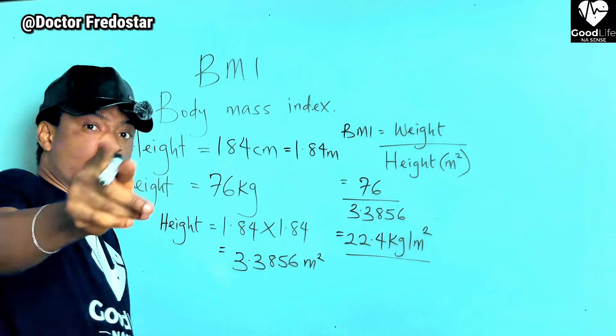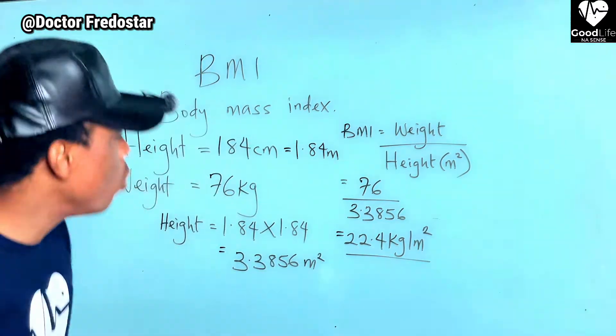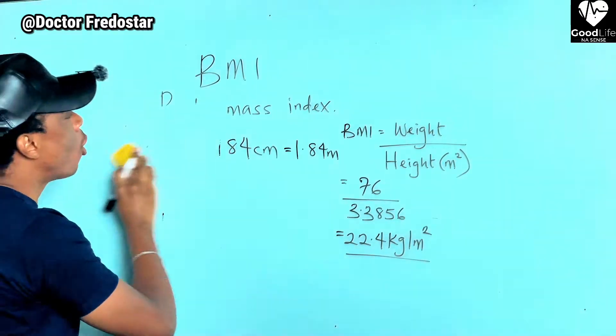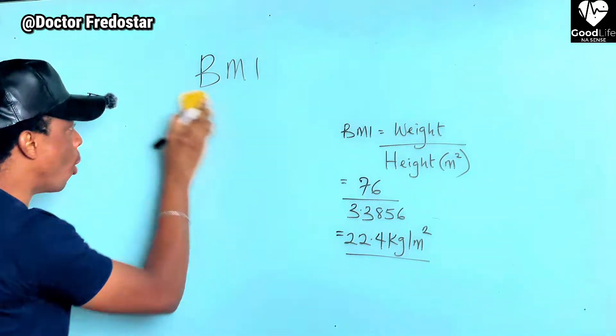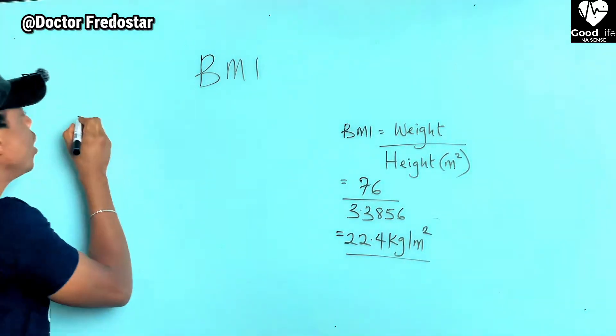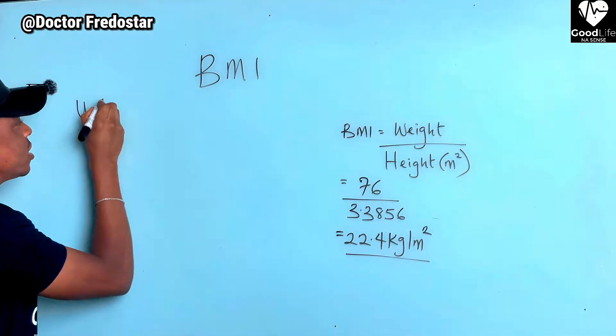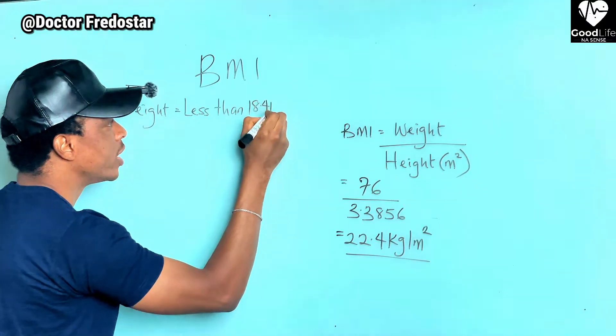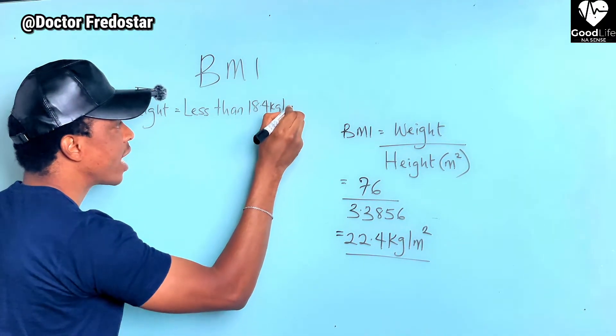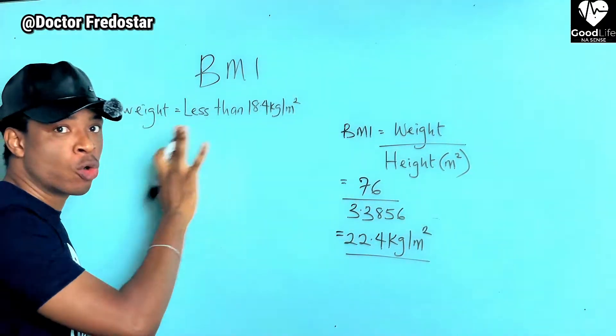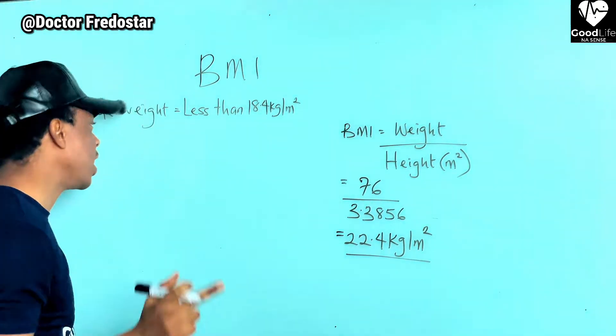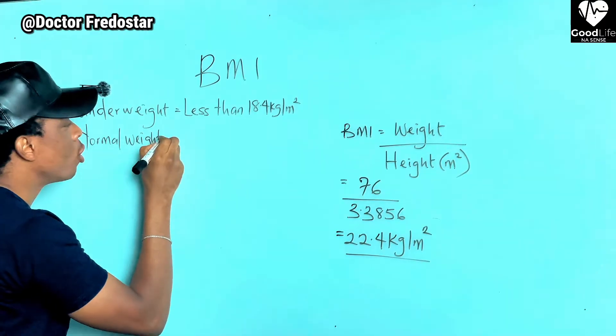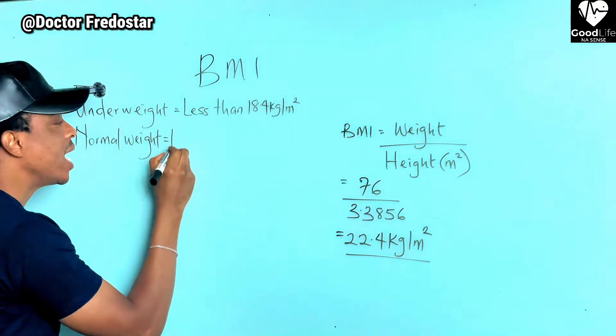Now how you can know whether this 22.4, what is your BMI? If your BMI is less than 18.4 kilograms per meter square, that's underweight. If you're normal weight, your BMI is between 18.5 to 24.9.